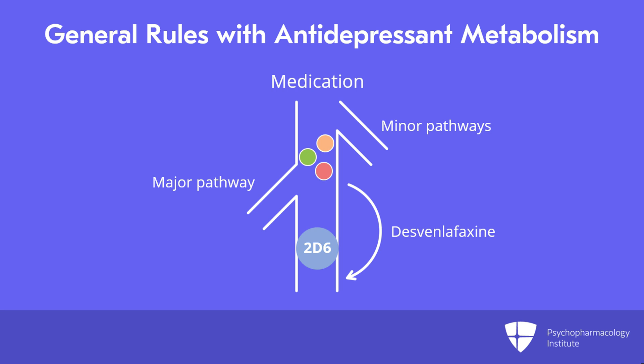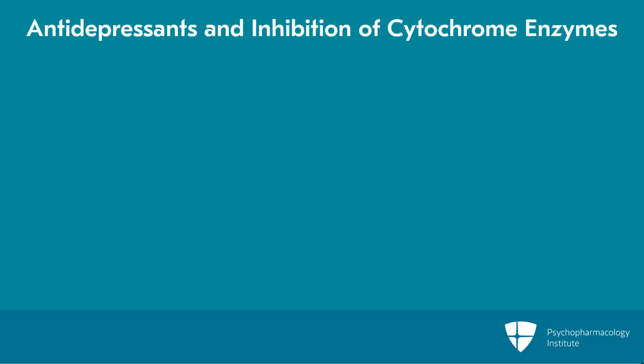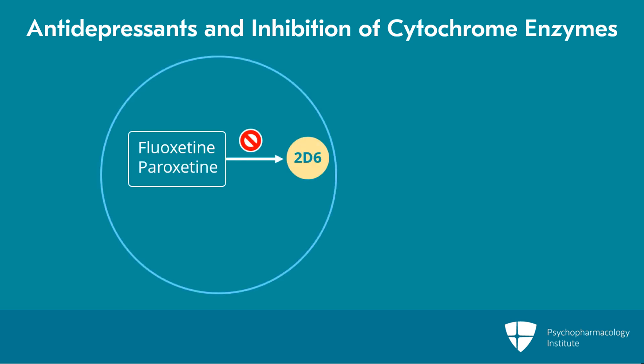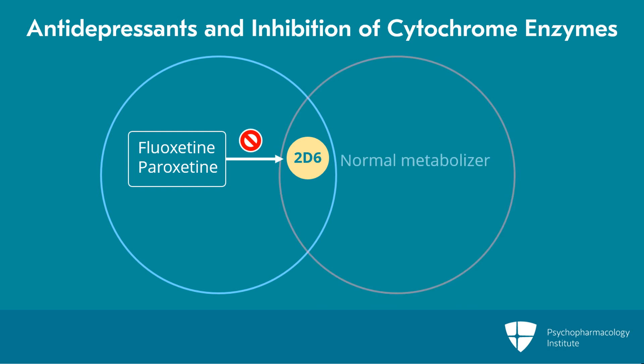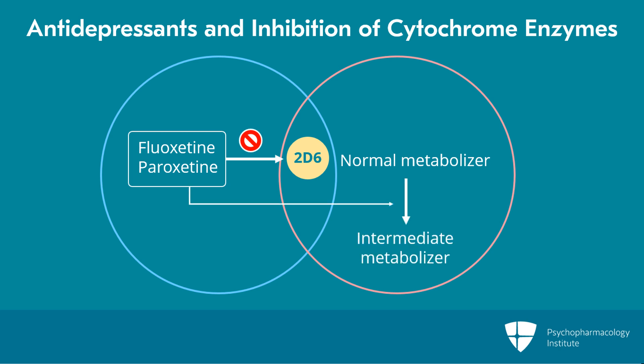Pristiq is basically the active form of venlafaxine, which is Effexor. Sometimes our antidepressants will inhibit an enzyme as well as be metabolized by it. For example, fluoxetine and paroxetine inhibit 2D6, which can cause a person who is a normal metabolizer of 2D6 to become an intermediate metabolizer. The antidepressant fluvoxamine, which is Luvox, also inhibits several different pathways.